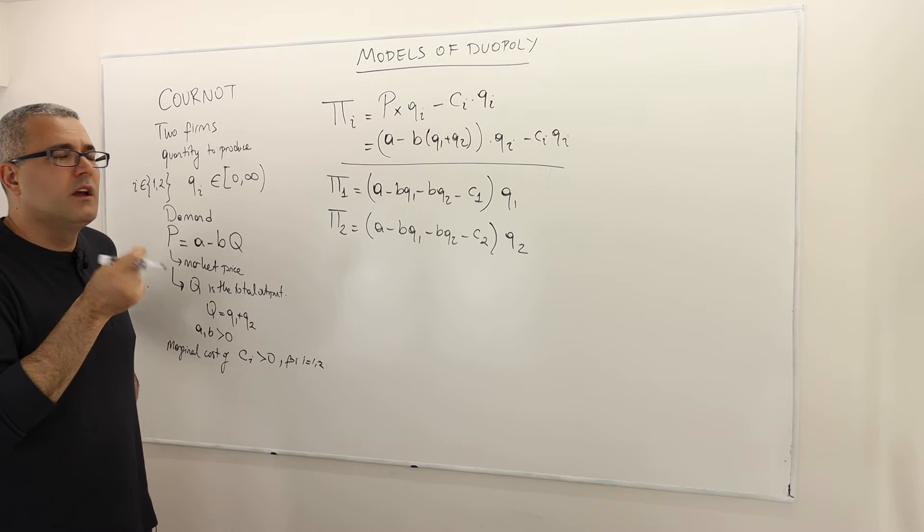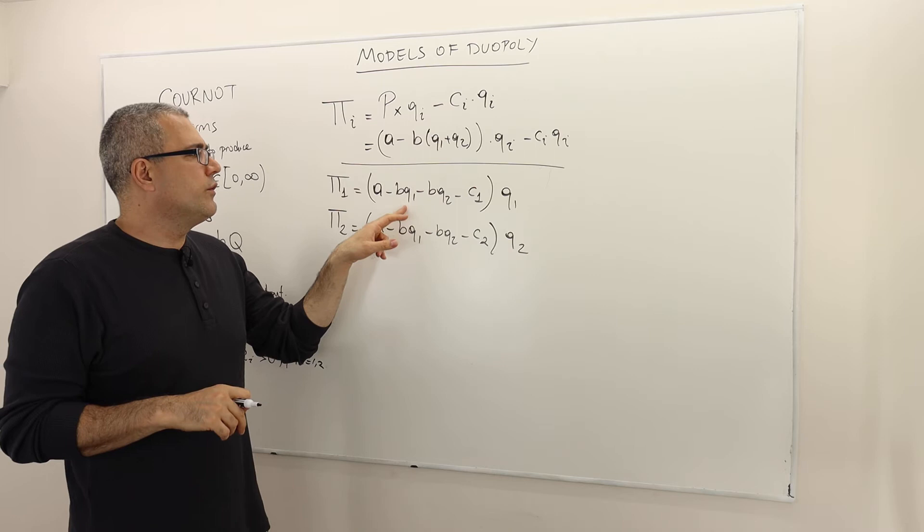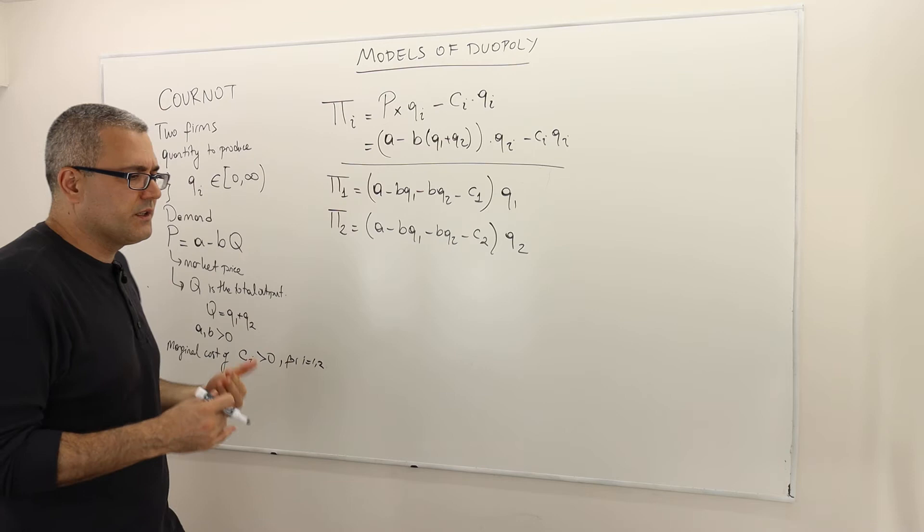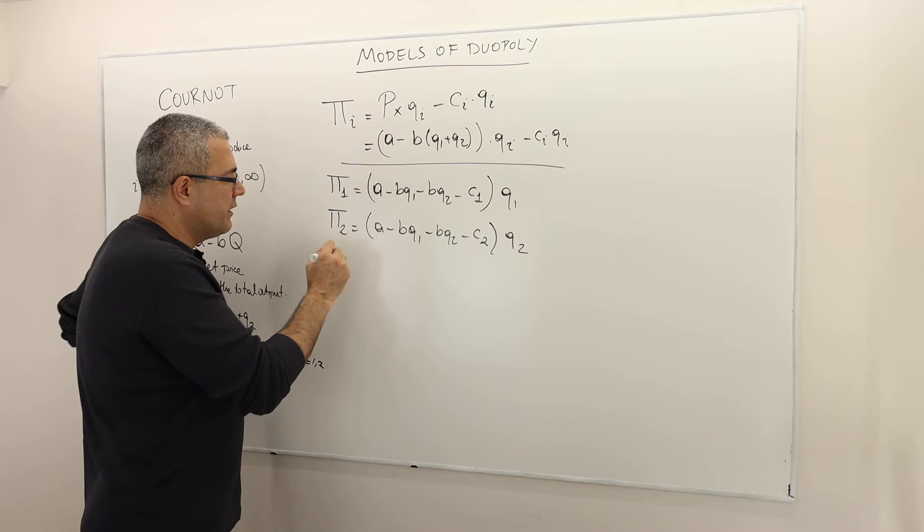This is a symmetric game: whenever you see Q1, write Q2; whenever you see Q2, write Q1; and whenever you see C1, write C2. You get the profit of the second firm from the profit function of the first firm. So it's a symmetric game.